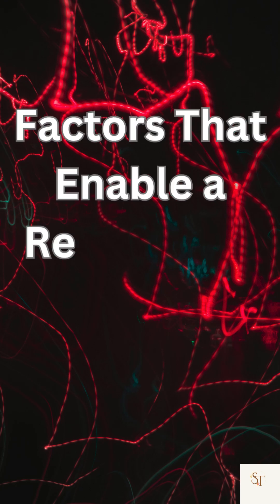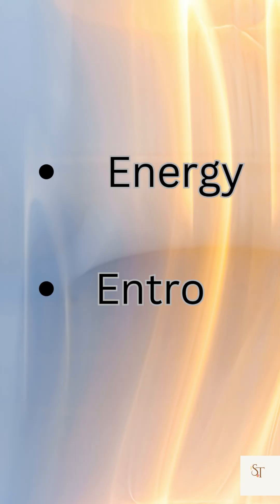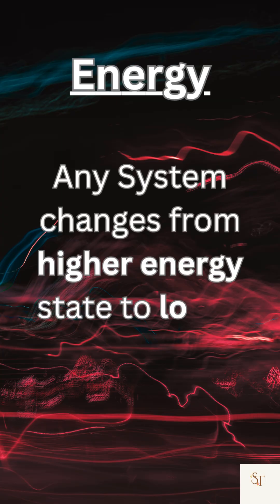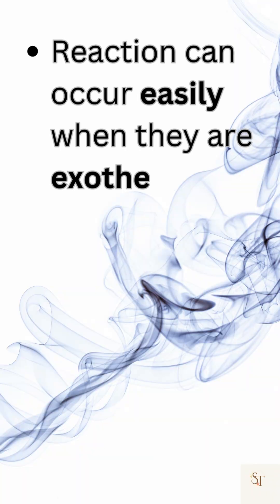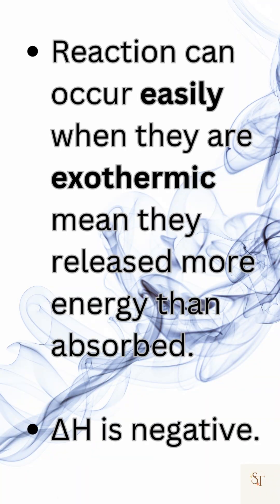There are mainly two factors that enable a reaction to be spontaneous: energy and entropy. Any system changes from a higher energy state to a lower energy state. Reactions can occur easily when they are exothermic, meaning they release more energy than is absorbed, so delta H is negative.